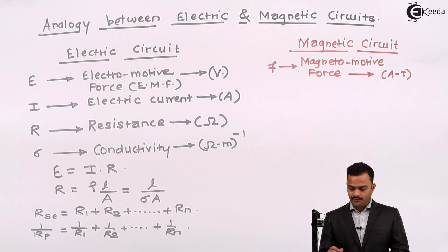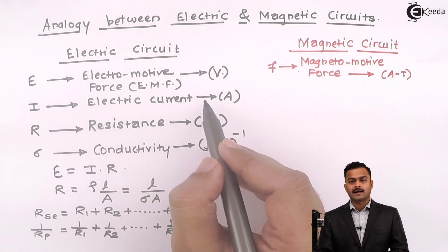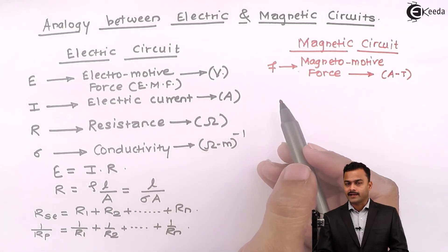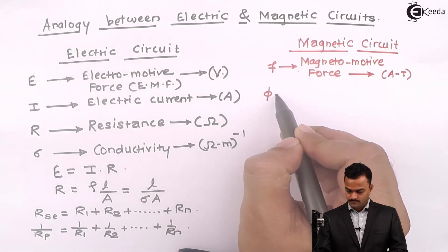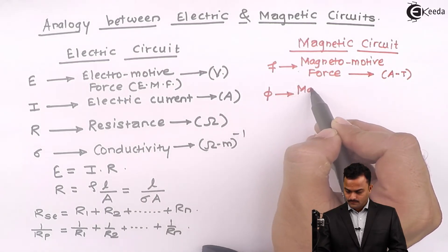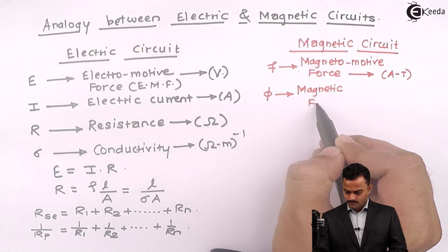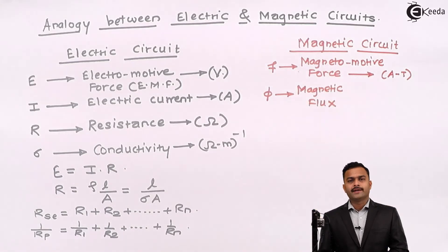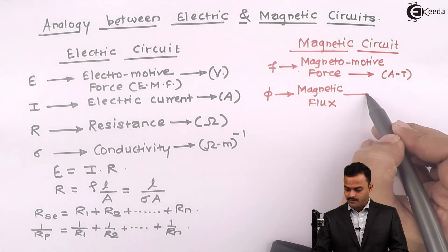Next we have, analogous to electric current is magnetic flux. The unit of magnetic flux is Weber.